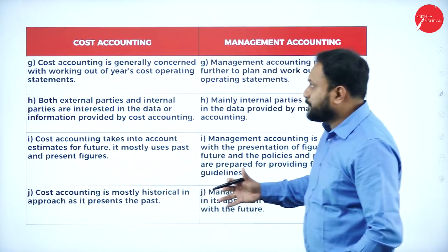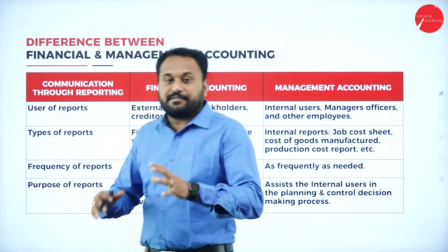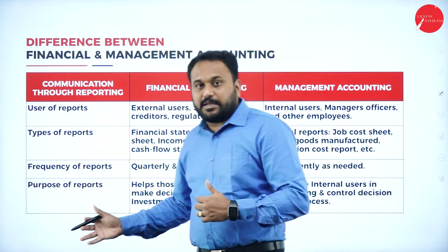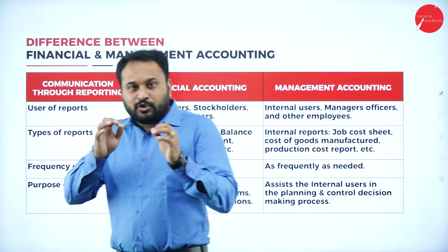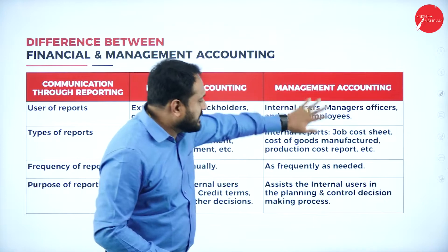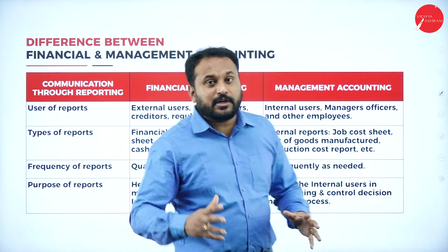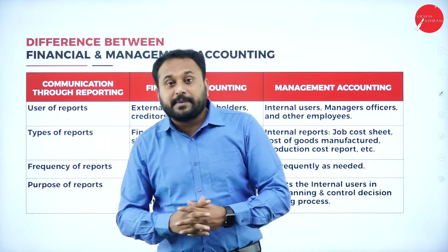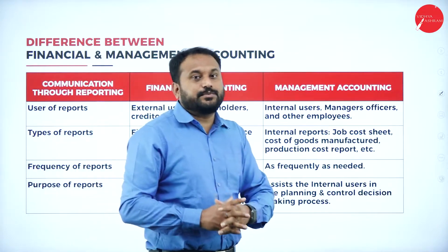Next are the differences between financial accounting and management accounting. I've given you a tabular format with the basis of differentiation, financial accounting on one side, and management accounting on the other. Financial accounting is all about historical data — it deals with the past and previous records. But management accounting is all about current and future data.